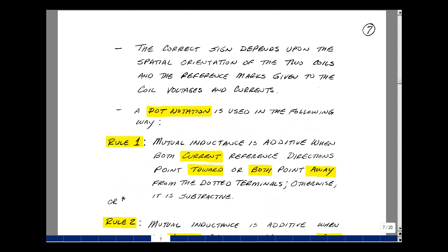The correct sign depends upon the spatial orientation of the two coils and the reference marks given to the coil's voltages and currents. We're going to use a dot notation in the following way.